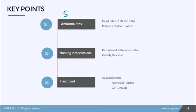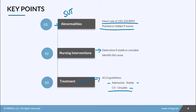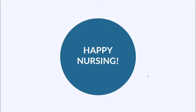The key points to remember regarding SVT: the heart rate is usually between 150 to 250 beats per minute — the heart is going way too fast. Sometimes the P waves can be pointed or hidden behind the T waves. For nursing interventions, determine if your patient is stable or unstable. If you can, find out the cause and treat the cause. Follow ACLS guidelines for treatment. If they are stable, give adenosine. If they are unstable, cardiovert them right away to try to convert them.